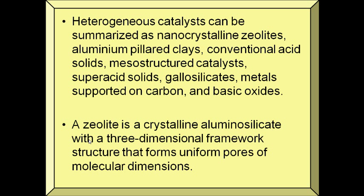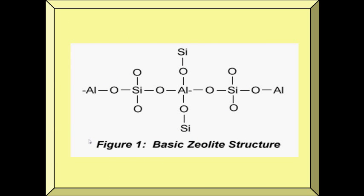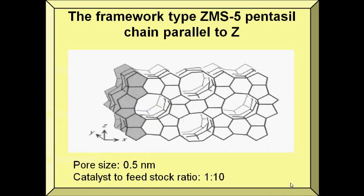A zeolite is a crystalline aluminosilicate with a three-dimensional framework structure that forms uniform pores of molecular dimensions. Zeolites act as sieves on a molecular scale and exclude molecules that are too large to pass through the pores. The three-dimensional framework structure significantly increases the surface area and absorbs molecules that have similar sizes as the pores. This shows the basic zeolite structure — the framework type ZSM-5 pentasyl chain parallel to the z-axis with a pore size of 0.5 nanometers.